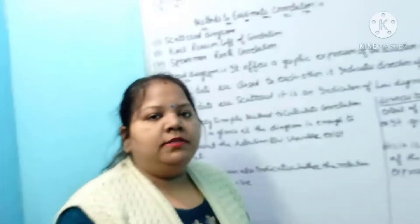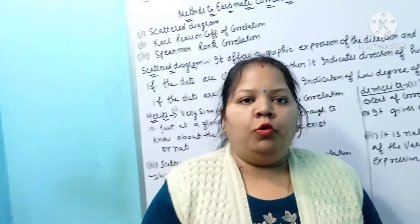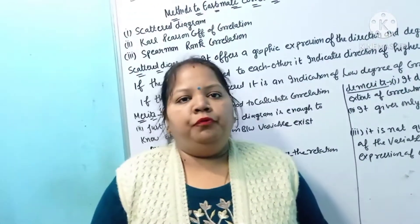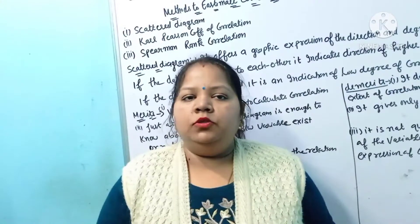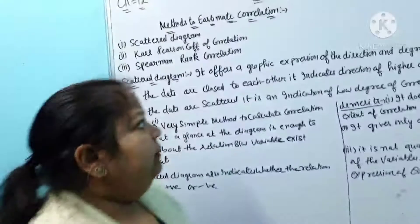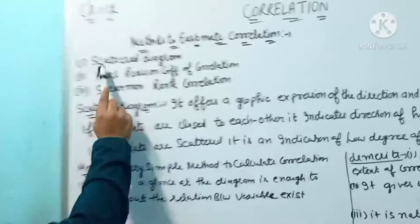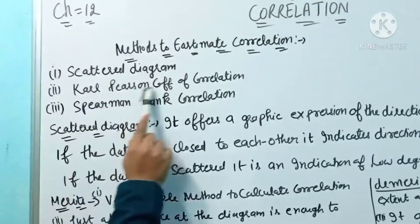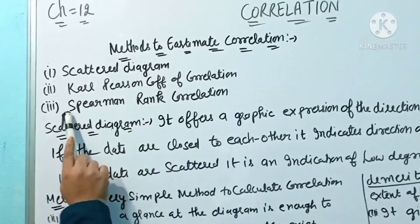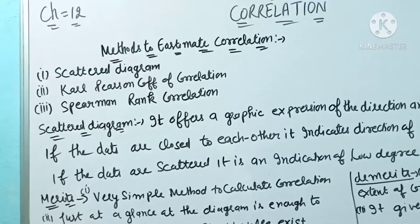Good morning, 11th class. Today we will continue our chapter of correlation. I am going to discuss the different methods to calculate correlation. There are three types of methods: first one is scatter diagram, second is Carl Pearson coefficient of correlation, and third is Spearman rank correlation.